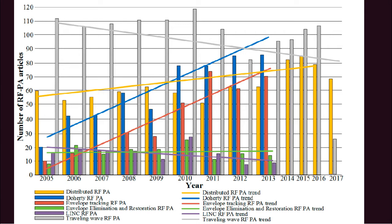We can also see that the distributed amplifier is gaining traction — the numbers are rising. The traveling wave RFPA is somewhat decreasing now because of the high complexity involved, but it offers very high bandwidth and gain as well. LINC RFPA is decreasing in importance, as is envelope elimination and restoration. We will discuss all those topologies in the coming part of this lecture.